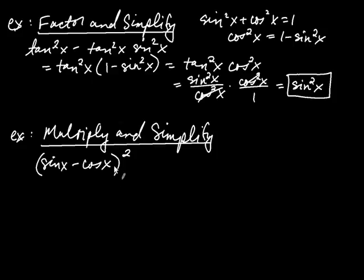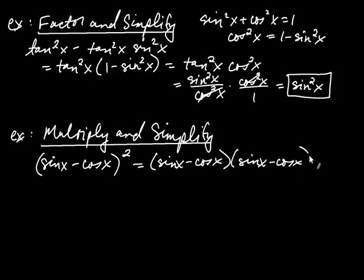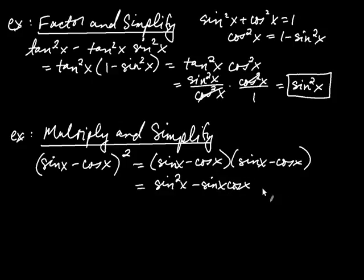Let's try another one: (sin x − cos x)², which is (sin x − cos x)(sin x − cos x). Multiplying out: sine times sine is sine squared, then minus sine x·cosine x, then another minus sine x·cosine x, and finally negative cosine times negative cosine is positive cosine squared.